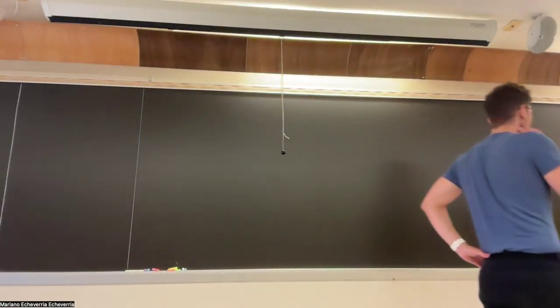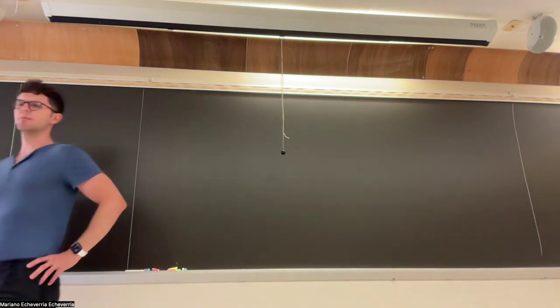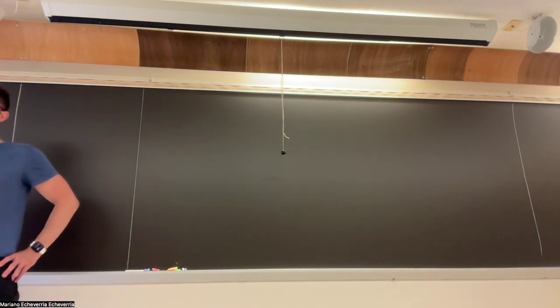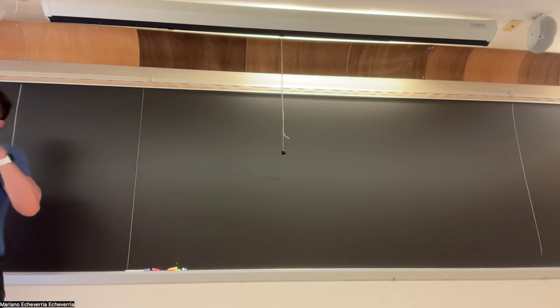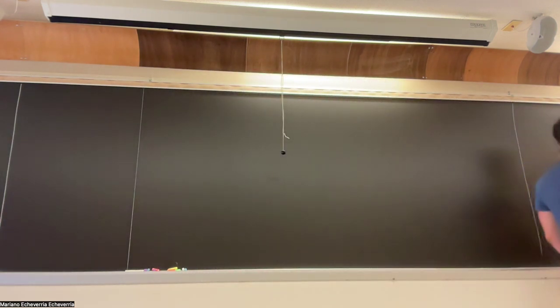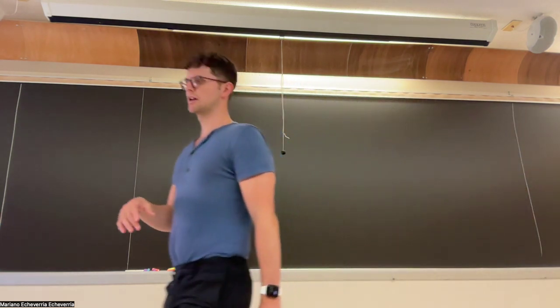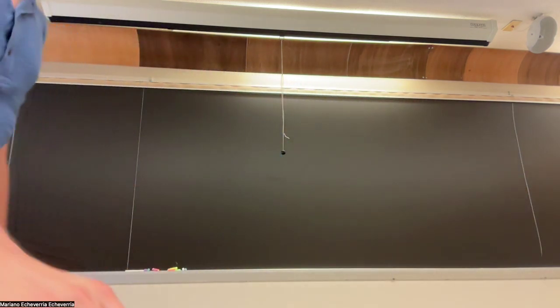Today I'll be explaining some useful identities. We've used some of them in the past, but it's convenient to have them all together as a list of formulas. I'll go through them, explain where they come from, and then give some examples on how they can be used to factorize and do other things.